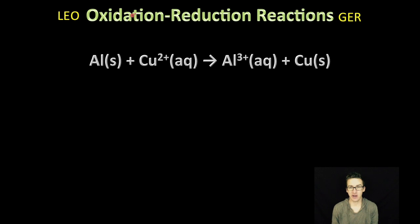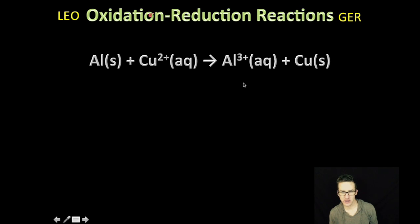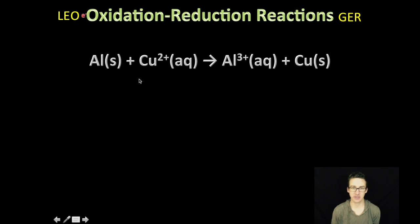Before we start talking about how to actually balance a redox reaction using the half reaction method, I want you to take a look at the reaction that you've got on your screen in your notes. You might be thinking to yourself, wait a minute, this thing is already balanced. I've got one aluminum on the reactant side, one aluminum on the product side, one copper on the reactant side, one copper on the product side. Isn't this already balanced? And although it is balanced for mass, our focus in redox reactions is the transfer of electrons. In addition to the balance of mass, we also have to be balanced for charge.